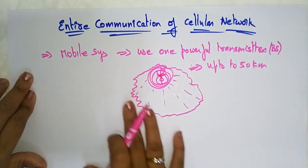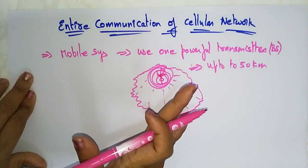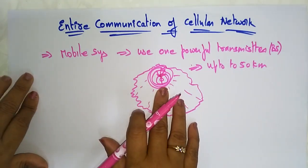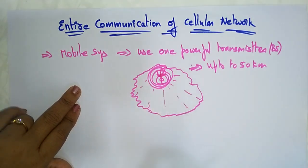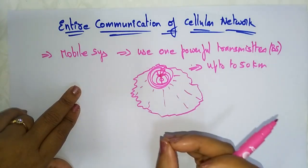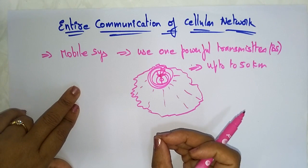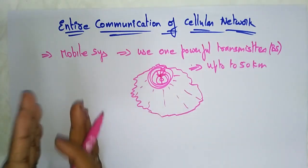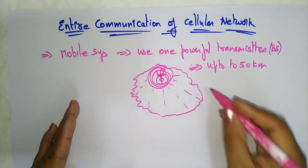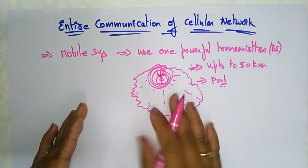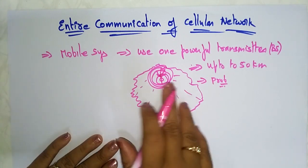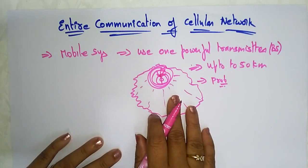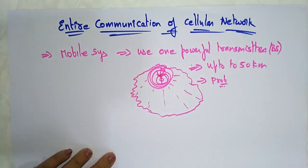When only one transmitter covers up to 50 kilometers, there are two problems. First, the transmitter is more powerful, which means it is more expensive. But the main problem in the earlier mobile systems — where only one powerful base station exists — is that the frequency cannot be reused throughout the system.